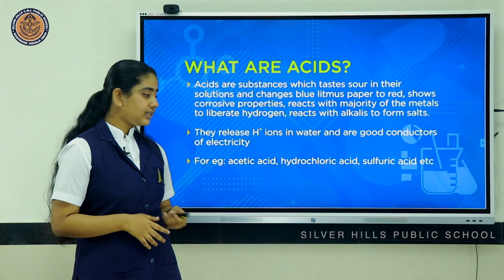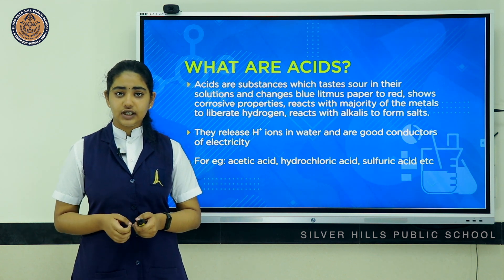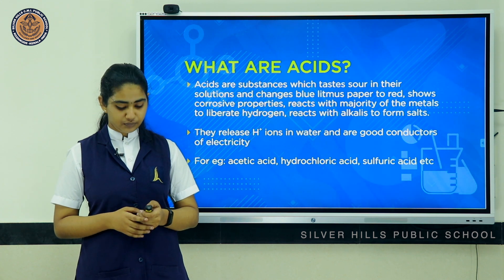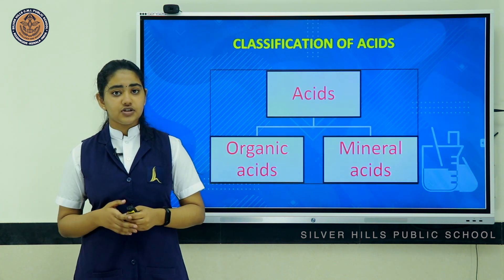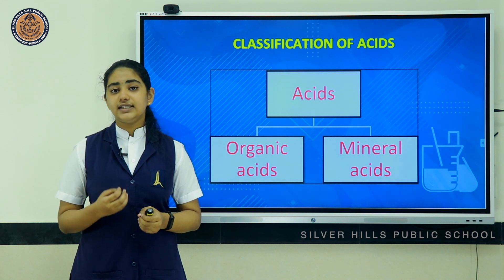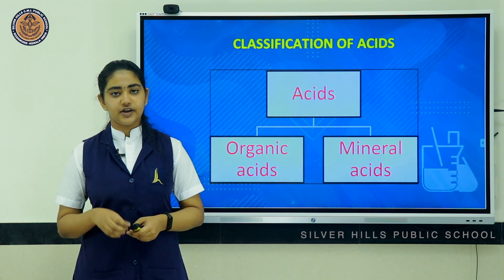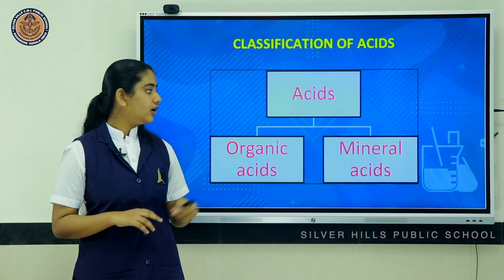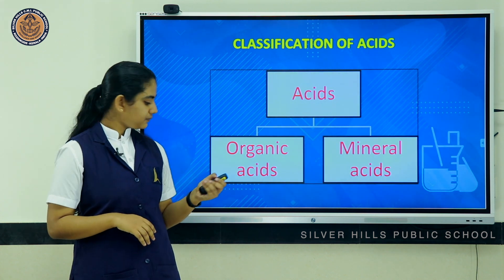Acetic acid, hydrochloric acid, and sulphuric acid are some of the examples. Moving on to the classification of acids — based on origin, acids can be classified into two types: organic acids and mineral acids.